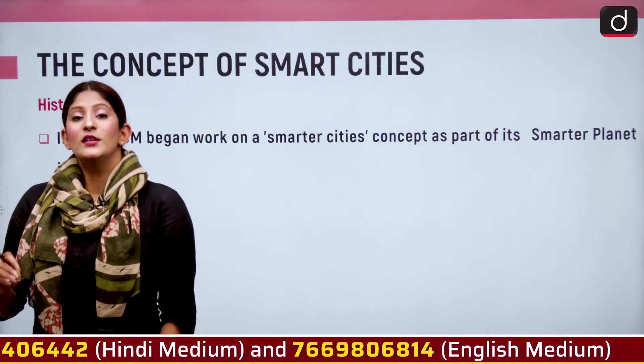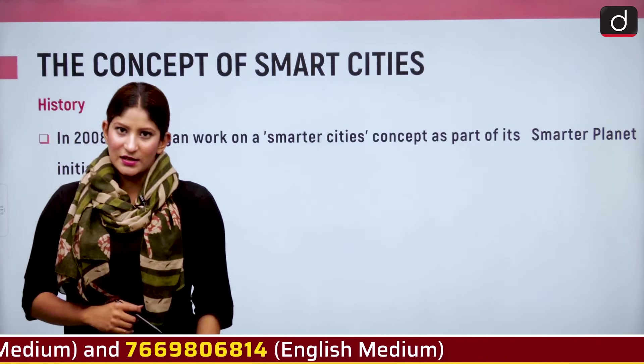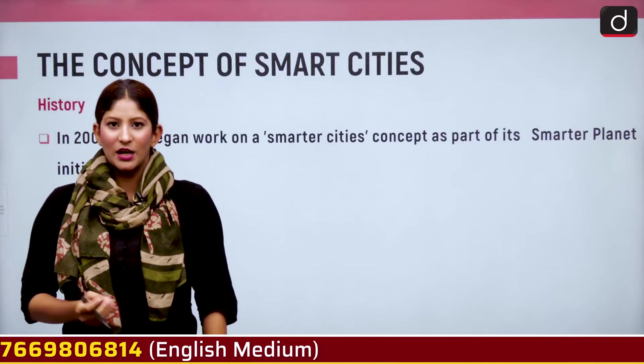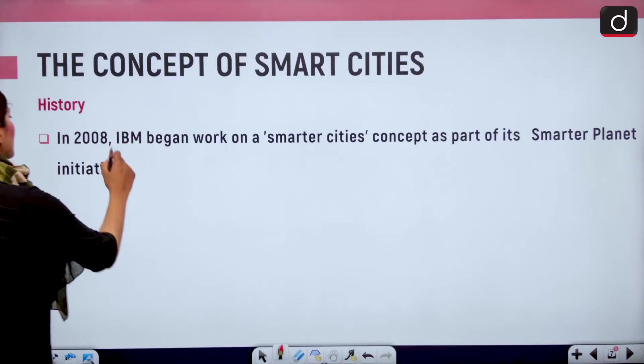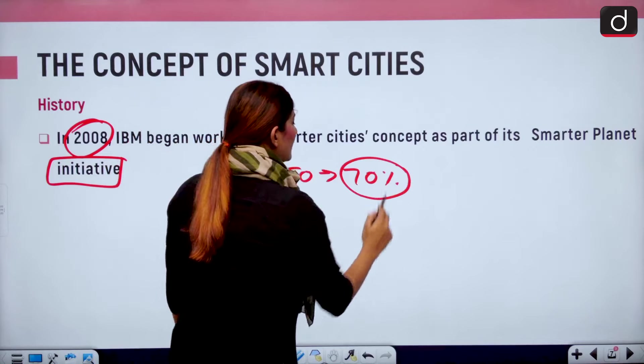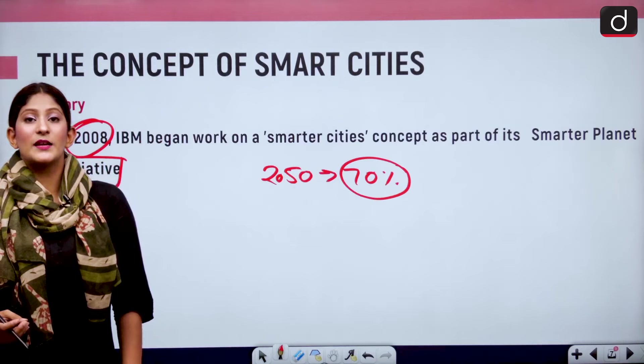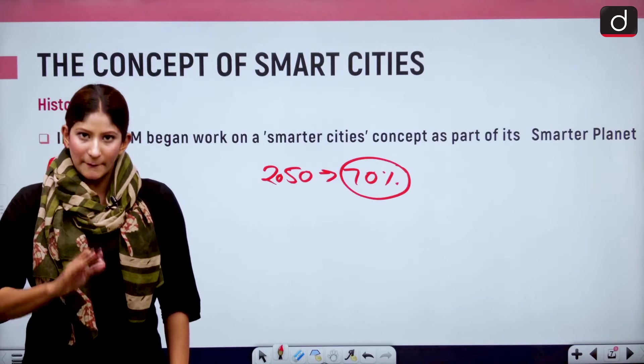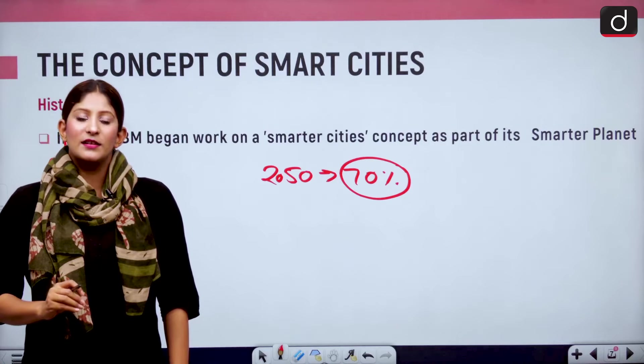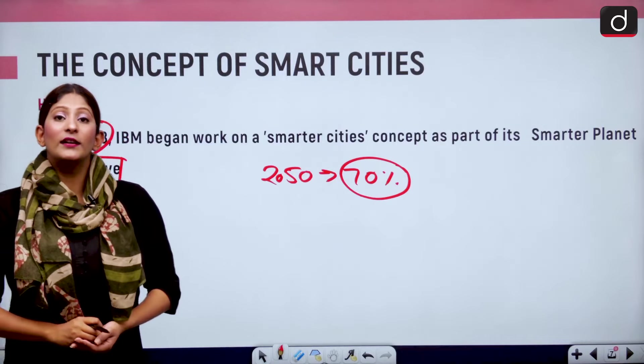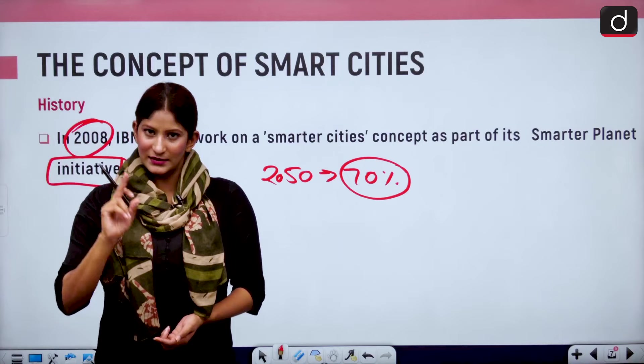Let's talk about the history of smart cities. The history goes back to 2008 when the world was going through its worst economic recession. IBM in 2008 began work on the Smarter Cities concept as part of its Smarter Planet initiative. By the year 2050, 70 percent of the population will be living in cities. India is becoming highly urbanized, and we need to manage the pressure created in urban cities due to rapid urbanization so that it does not create unnecessary burden on city resources. That is why we need smart cities.